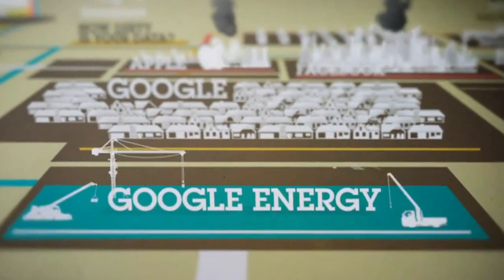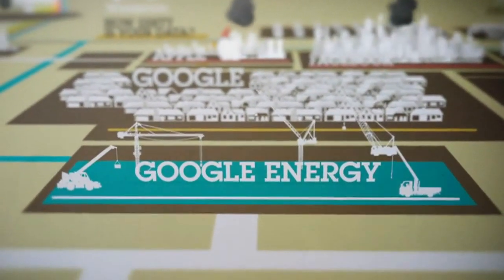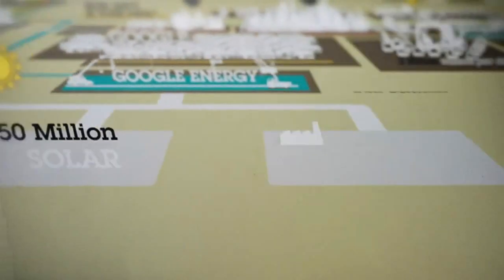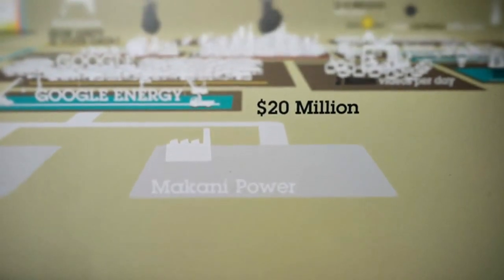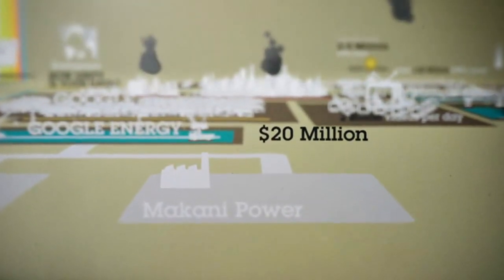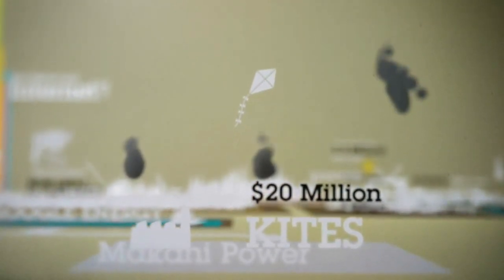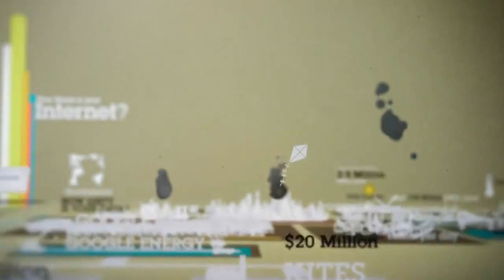It has created Google Energy, a company that invests in renewable start-ups, pumping more than $100 million into wind farms, $350 million into solar, and $20 million into Makani Power, a company that generates electricity by flying kites, tapping into wind currents at altitudes wind turbines can't reach.